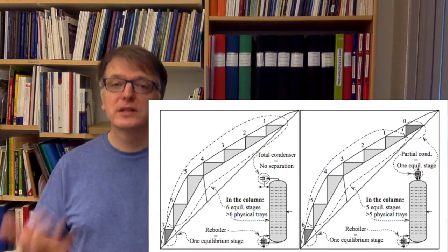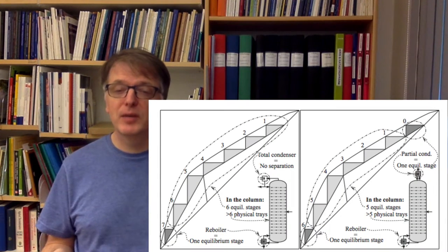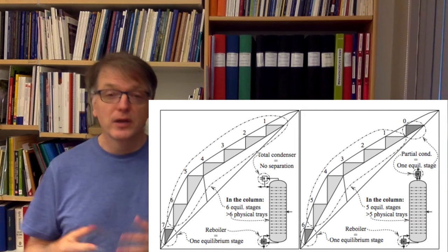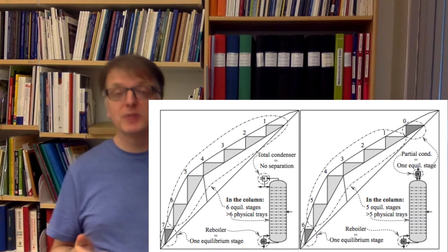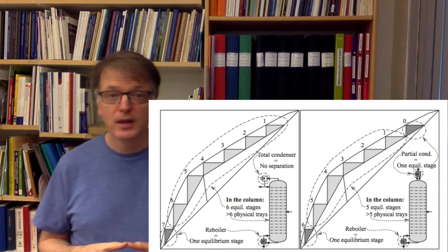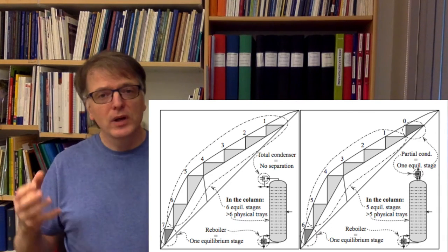Please remember that the number of physical trays always is larger than the number of equilibrium stages. Equilibrium stages are also sometimes called ideal trays. Why is that? Well that's because you can't reach equilibrium in a real physical tray. You can come close but not entirely to the equilibrium.